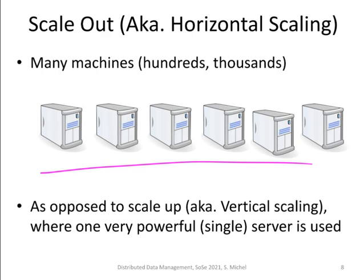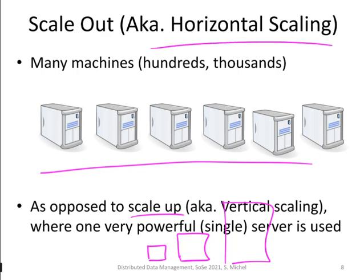If you have more data to analyze and you have the money, you buy more machines. In contrast to scale-out, there is scale-up, also called vertical scaling, where you have one server and if it's not enough for your task, you buy more hardware to create a more powerful server. This is limited by the CPUs, disks, and network connection you can put into a single server. So in the aforementioned applications and companies, you typically go for scale-out — horizontal scaling and not vertical scaling.